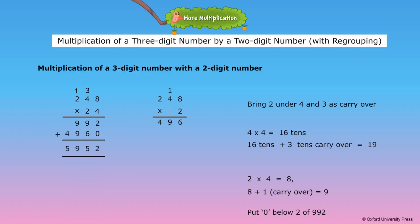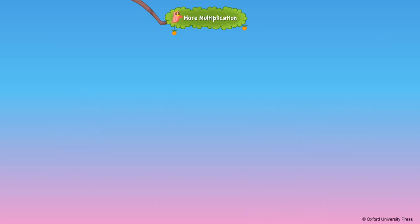two hundred and forty-eight multiplied by twenty-four is equal to five thousand nine hundred and fifty-two.